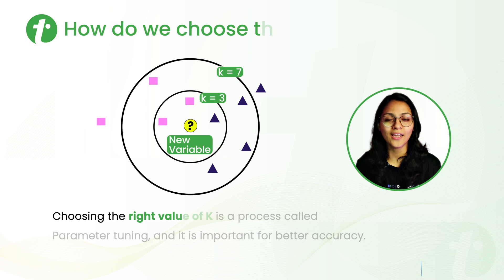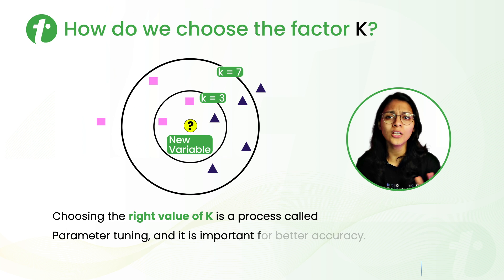Now there is a factor K on the basis of which we do all the predictions in KNN algorithm. So it's very important to choose the right value of K. How? Let's understand this with this example.